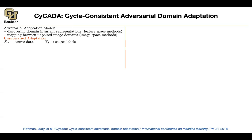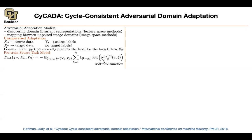To recap: you have source data, source labels, and target data, but no target labels — this is unsupervised domain adaptation. XS and YS are pairs of simulated data; XT is the real data. In the end, you want to find a classifier on top of XT. One option is to ignore the target data altogether and train a classifier on the source data using the usual cross-entropy loss, training FS, the feature extractor, on your source data.